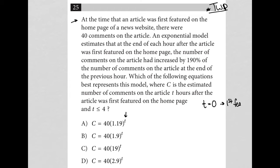It looks like in this case, based upon even just this first sentence, that T equals zero just means first featured. Because obviously the article was written before it was featured. So it was written, it got some comments, got 40 comments, and then it was featured. So at time equals zero when it was first featured, we have 40 comments.